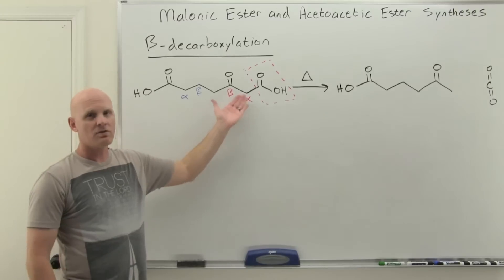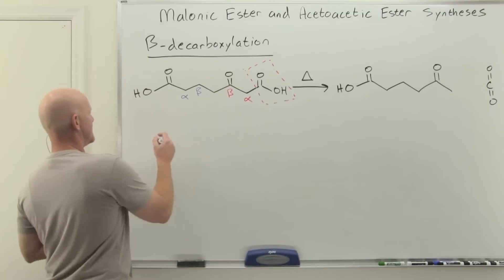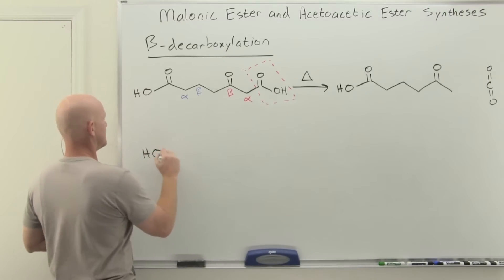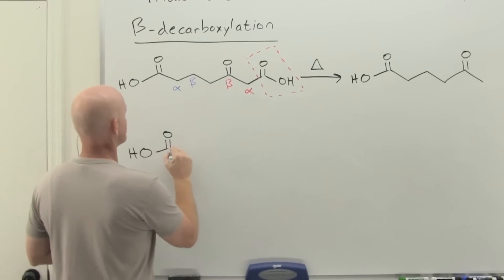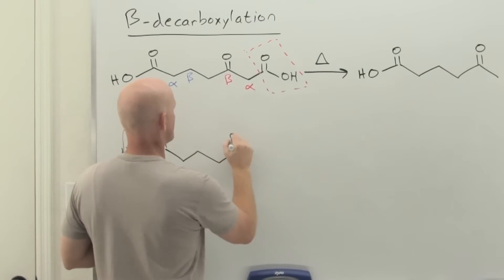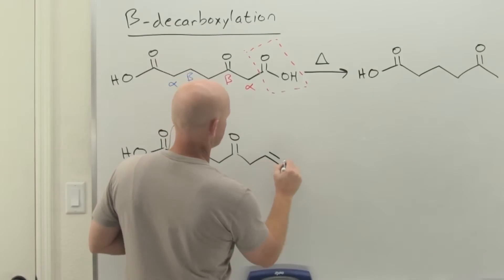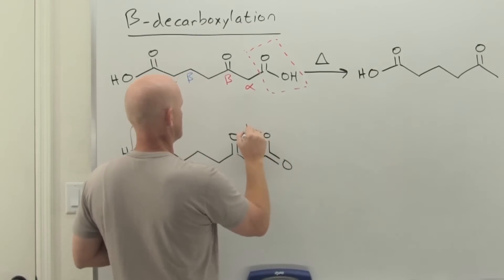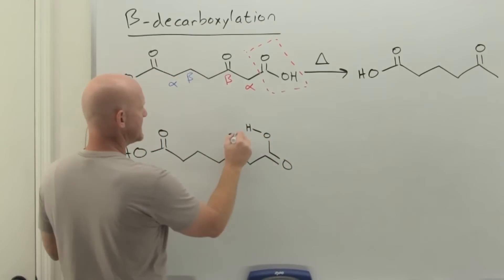The question might be, well, what's so special about this beta position that it's the one we lose? This goes down to the idea that six membered rings are fairly stable and have very little ring strain.